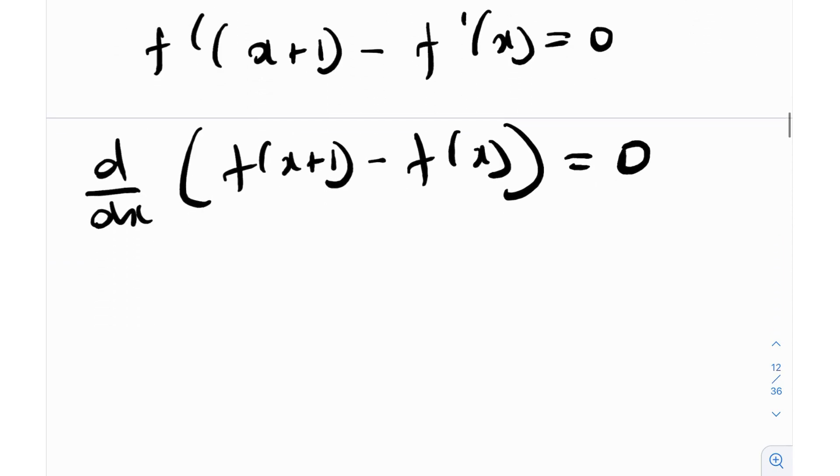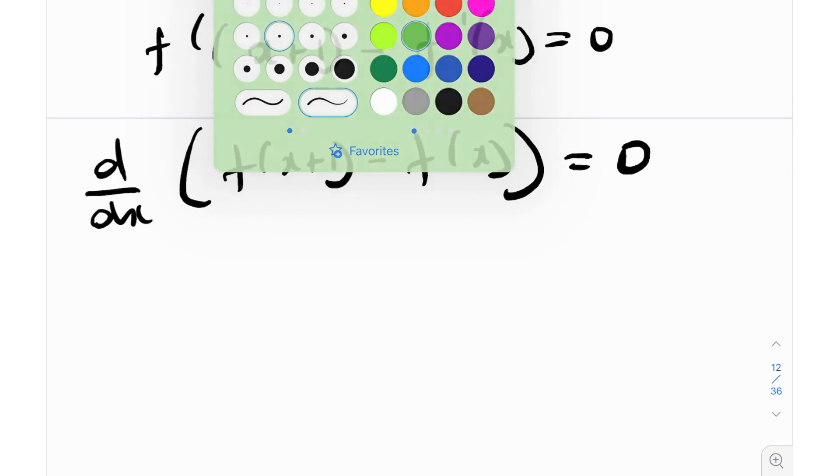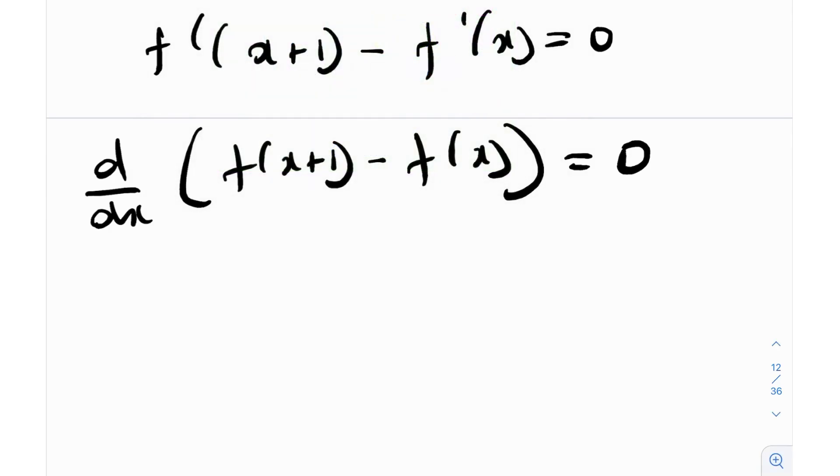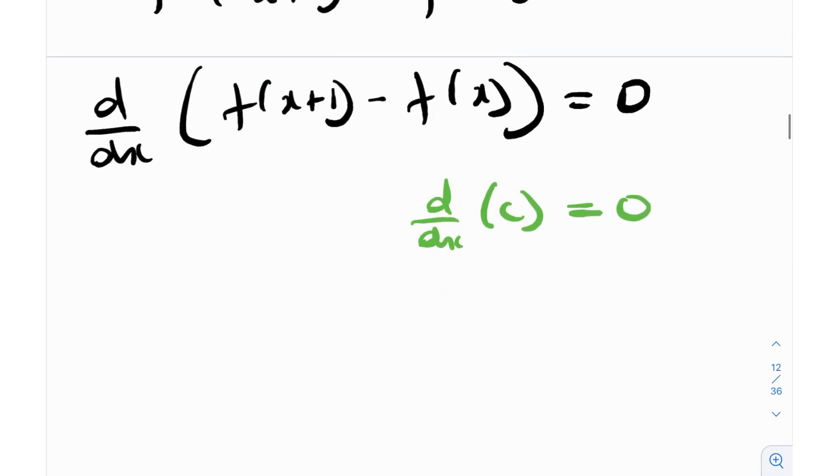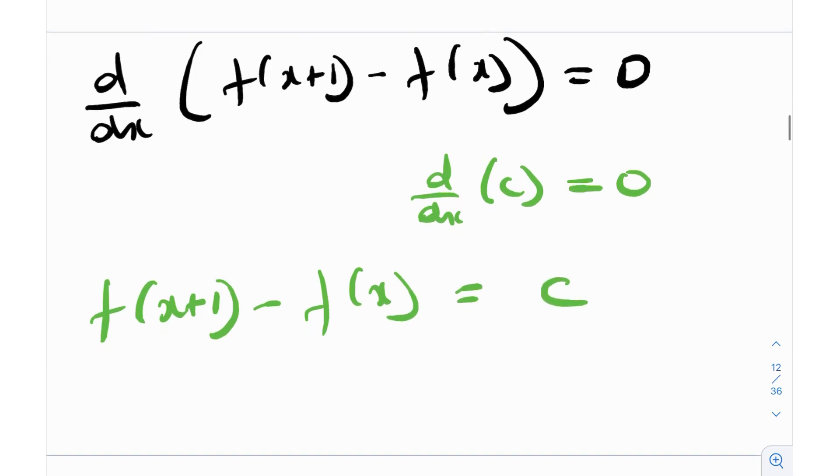So what does that mean? When is a derivative 0? When is a derivative of something 0? When that thing is constant. For example, d/dx of a constant c is 0. So that means that this f(x+1) minus f(x) has to be a constant c. Again I'm getting the intuition that it's linear. But okay, we haven't completed the proof yet.